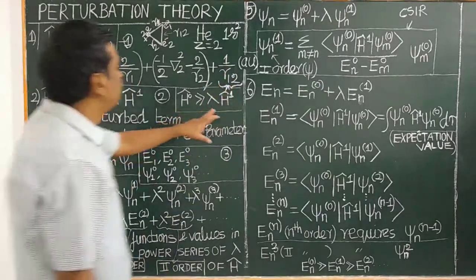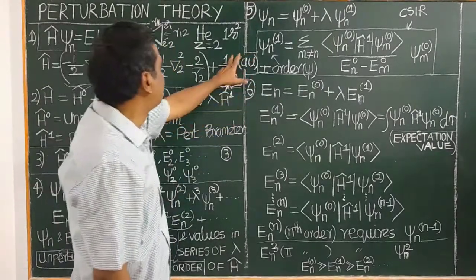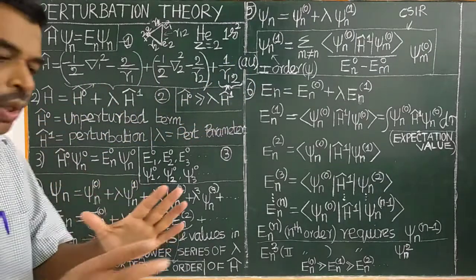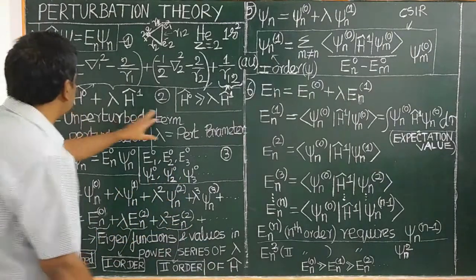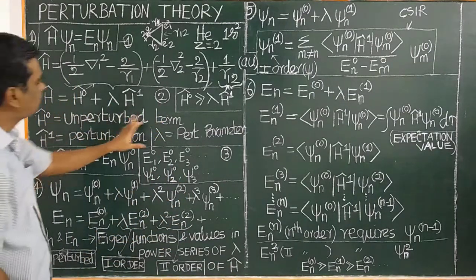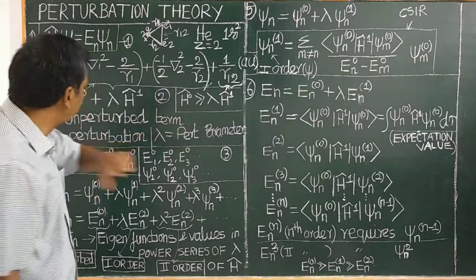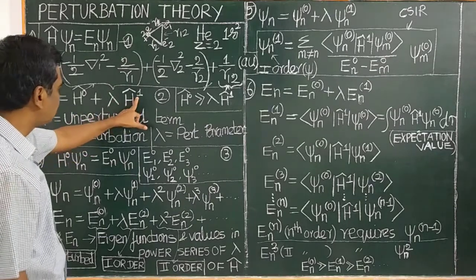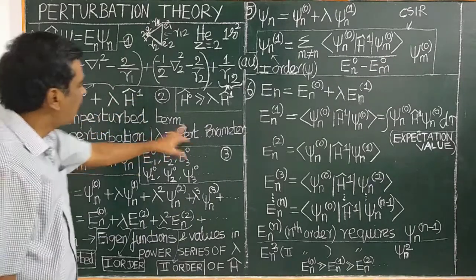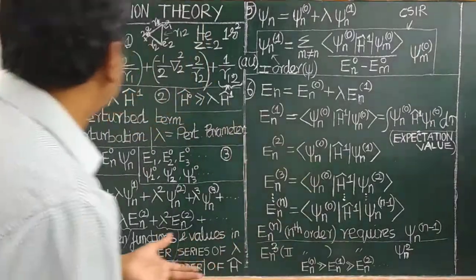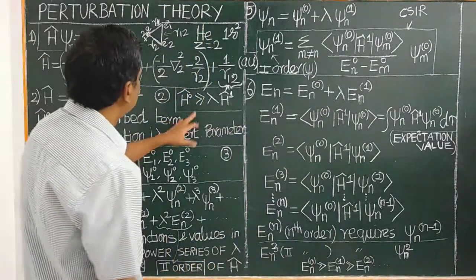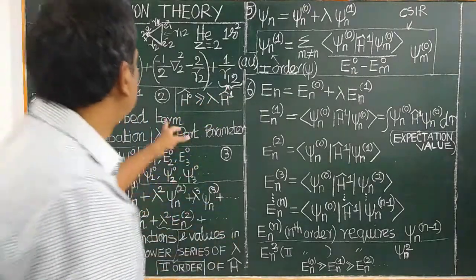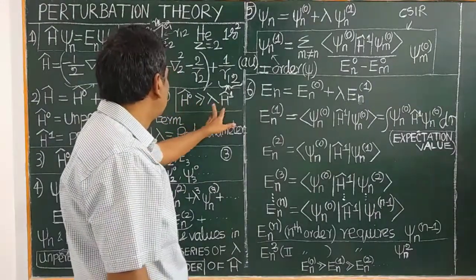In perturbation theory, the Hamiltonian is split into two parts. The first part is called the unperturbed Hamiltonian, and the second part is called the perturbation term. The perturbation term is always smaller than the unperturbed term.